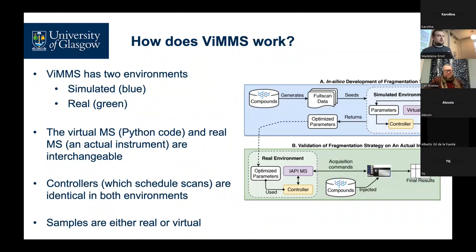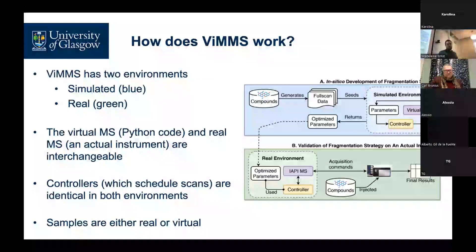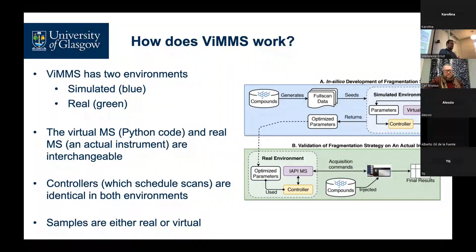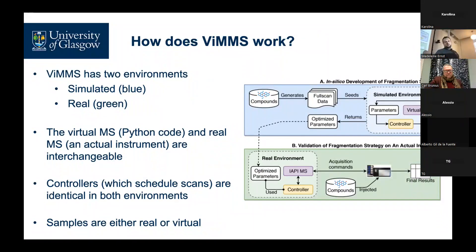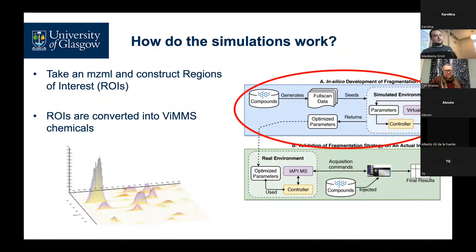VIMS works by having two environments with quite a lot of overlap between them: a simulated environment and a real environment. In the simulated environment we have a virtual mass spec — basically a large amount of Python code. In the real one we have an actual mass spec which we control by sending scan instructions. The controllers which implement these scan instructions are consistent across both, so for instance a Top-N controller will tell the machine to do either an MS1 or MS2 scan, and it does exactly the same for the virtual Python mass spec.